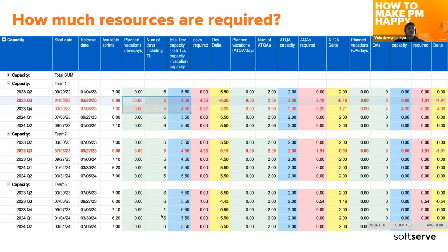We're usually using the OKR framework, so this could change. It could be quarters, years, months — whatever you want; everything is adjustable. In this screenshot you can see how the team's capacity is being calculated and how many devs are required to cover a particular scope. The most crucial column here is the delta — at some point you just check if your delta is not far away from zero.